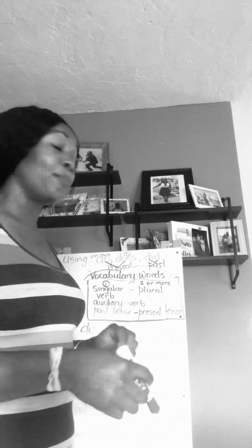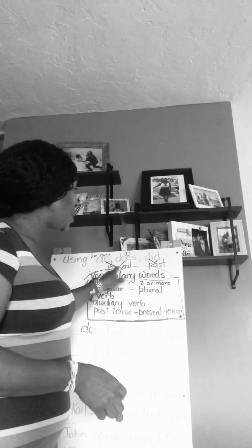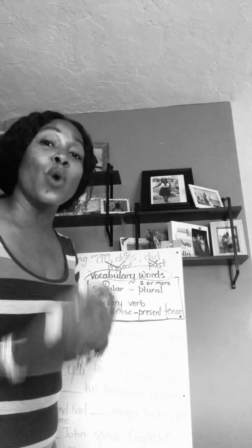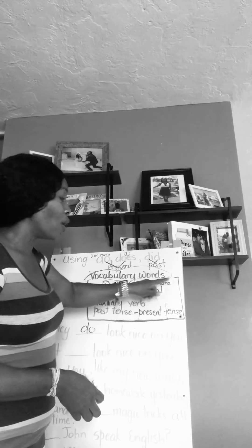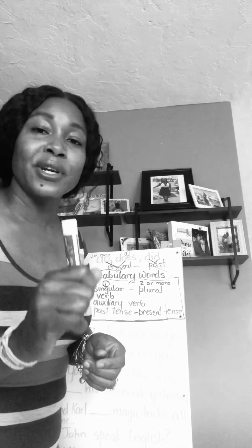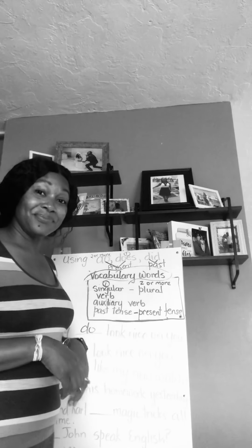Do and does are used for present tense — to show an action happening now. Did is used to show an action that happened in the past. The difference between do and does: do is used when more than one person is doing the action — it's plural, for two or more. Does is singular — used when one person is doing the action. Did is a little tricky, but we use did for both singular and plural, as long as it's past tense.